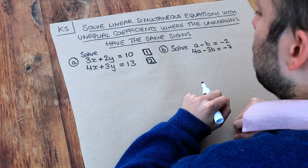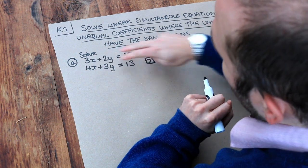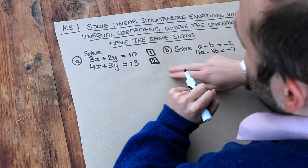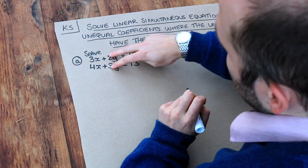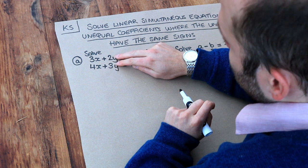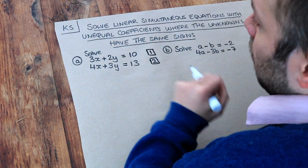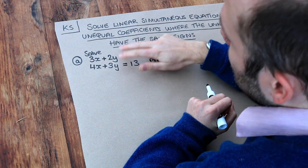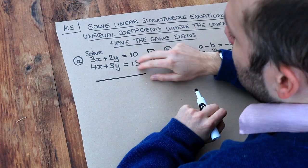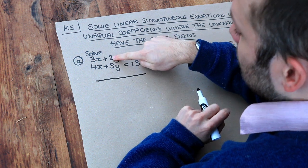So what we need to do is we need to scale the two equations to make either the x's or the y's the same. Doesn't matter which you pick; I'm going to choose to make the numbers in front of the y the same. Now let's think, if we can scale these two equations, what do 2 and 3 both go into? What's their lowest common multiple? Well, they both go into 6, so let's make the number in front of both these y's 6.